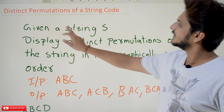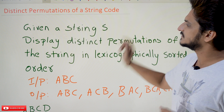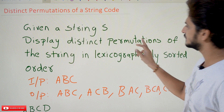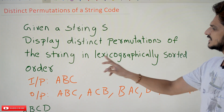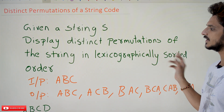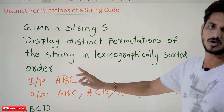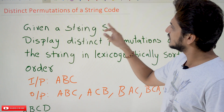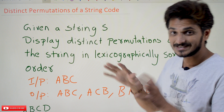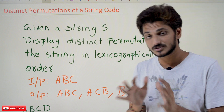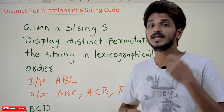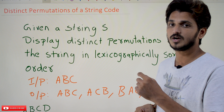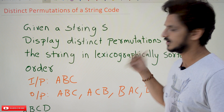So let's take the example: given a string, display distinct permutations of the string in lexicographically sorted order. They are going to provide you a string and we have to display distinct permutations of the string in lexicographically sorted order, which means ascending order.